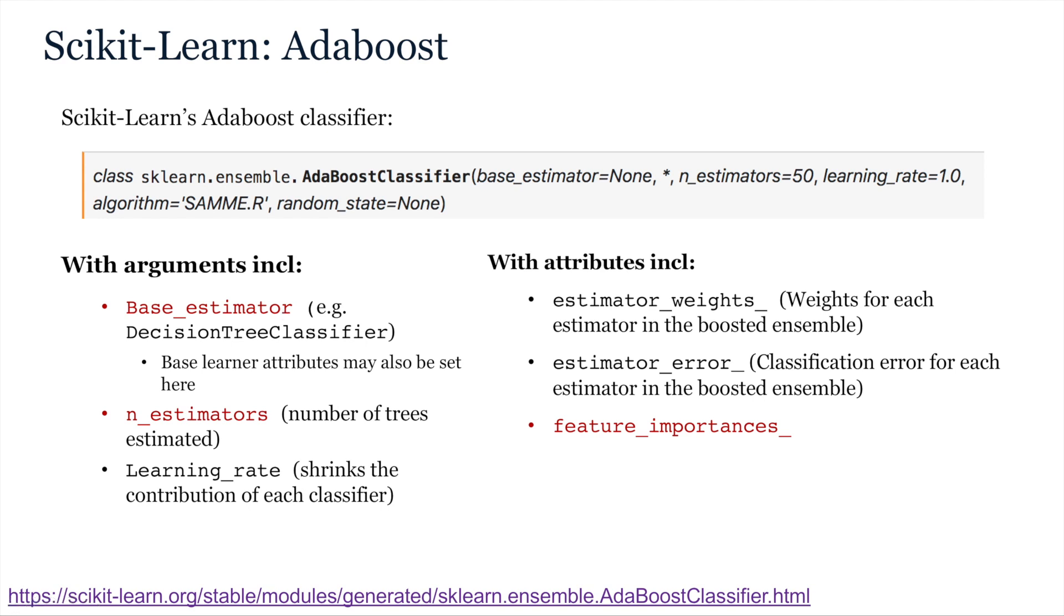So, note that if you want to optimize or set the parameters of the base learners, such as the decision trees, then you can do this by setting the base estimator with those arguments. So, the default is a decision tree, but if you want to use a decision tree without the default decision tree parameters, you can do that by passing a decision tree with non-default arguments as the base estimator.